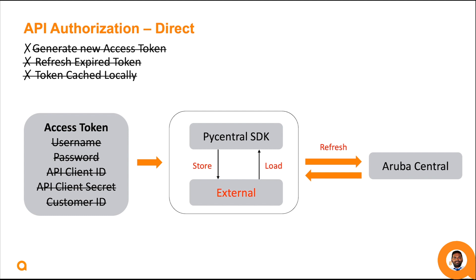In the next method, we will provide the access token directly to the PyCentral SDK. In this case, the token is not cached locally and we did not provide any information to refresh or generate new tokens. This method works as long as the token is valid. Beyond this stage, the end user can implement their own token refreshing mechanism and supply new tokens to the script as required.